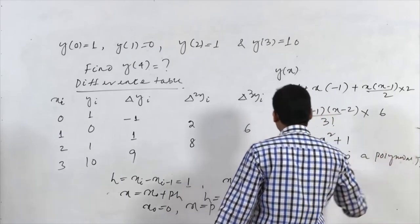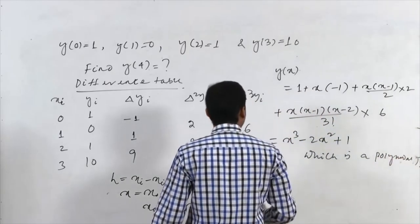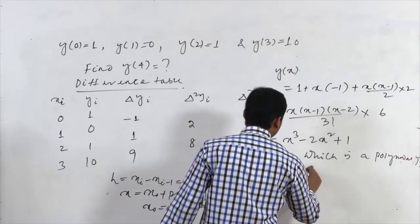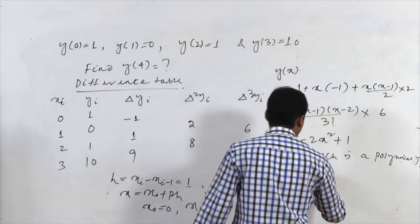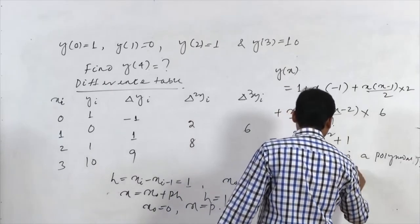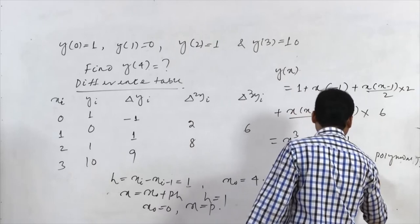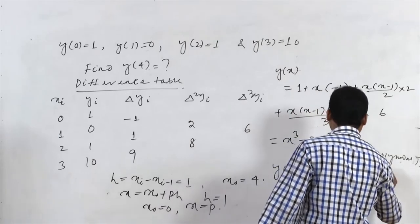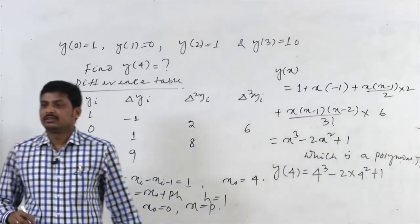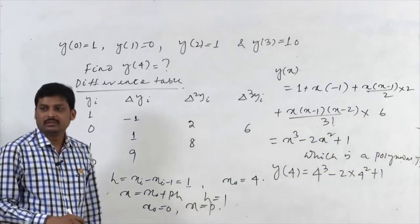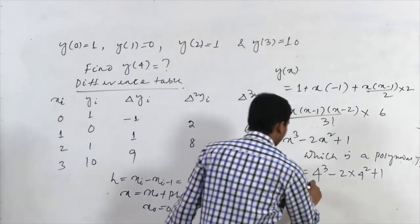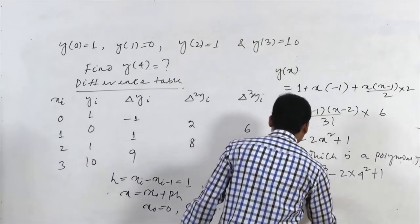To find Y(4): Y(4) = 4³ − 2×4² + 1 = 64 − 32 + 1 = 33.